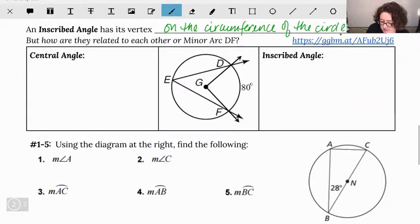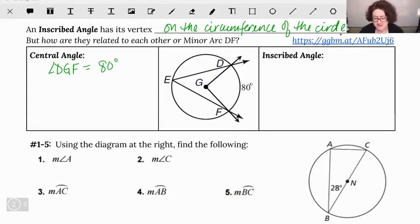Looking at the diagram, we have our central angle is angle DGF that has its center at center G, and that's going to have the exact same measure as the arc that we have, just like we were doing on the first set of examples.